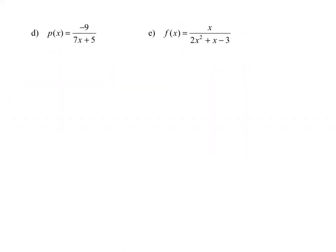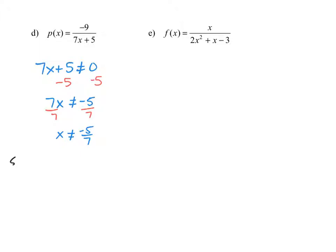In the next example, p of x equals negative 9 in the numerator over 7x plus 5 in the denominator. The domain is all real numbers except where the denominator equals zero. Setting 7x plus 5 cannot equal zero, we subtract 5 from both sides to get 7x cannot equal negative 5, then divide by 7 to get x cannot equal negative 5 over 7. In set notation, the domain is x such that x is a real number and x does not equal negative 5 over 7.